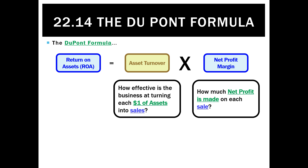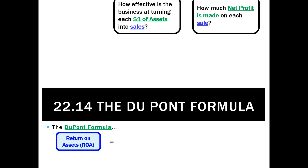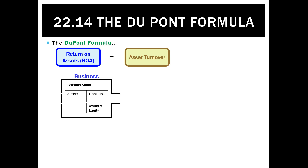How much net profit is actually made on each sale? The DuPont formula starts with the notion that we have a dollar of assets and a business will use those to generate sales — let's say that is four dollars. So we have an asset turnover of four times, meaning for every dollar of assets we're getting four dollars of sales. The problem with that number is we don't know whether we made a profit on those sales or if we did, how big it was.